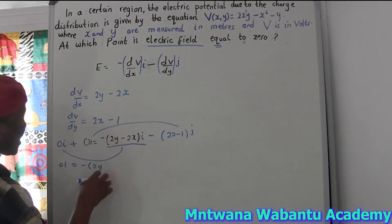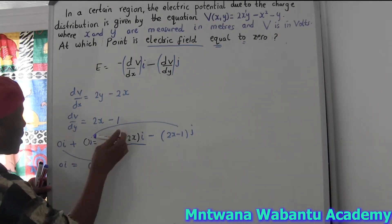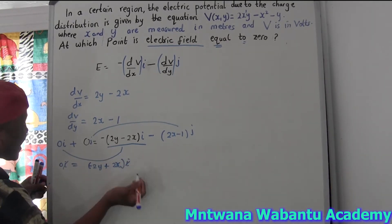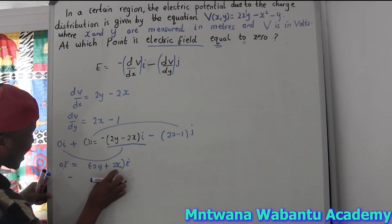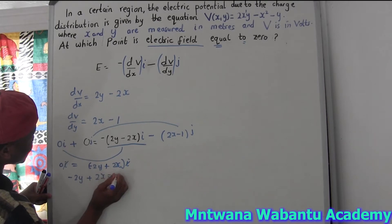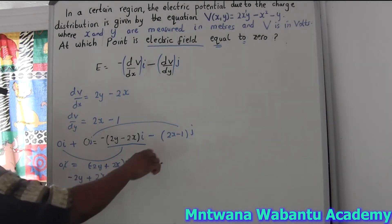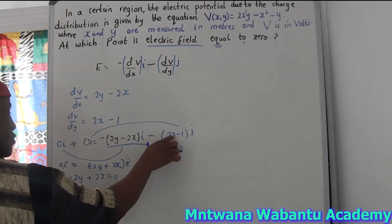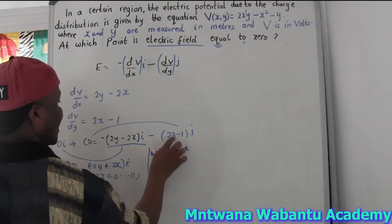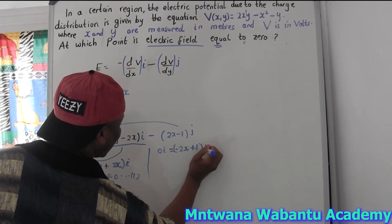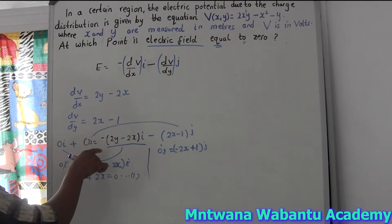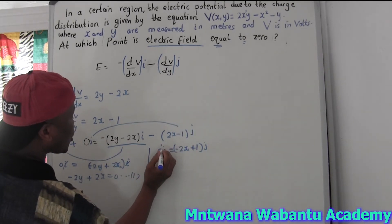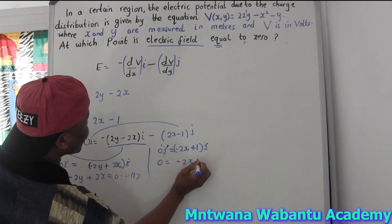By comparison of the i-hat components: 0 equals negative 2y plus 2x, giving us 2y plus 2x equals 0 — call this equation one. By comparison of the j-hat components: j and j cancel, so we have 0 equals negative 2x plus 1.